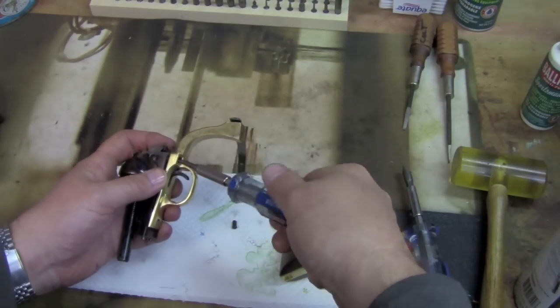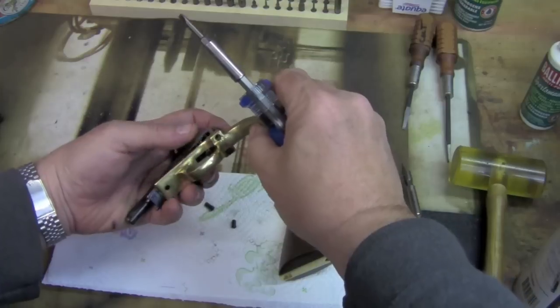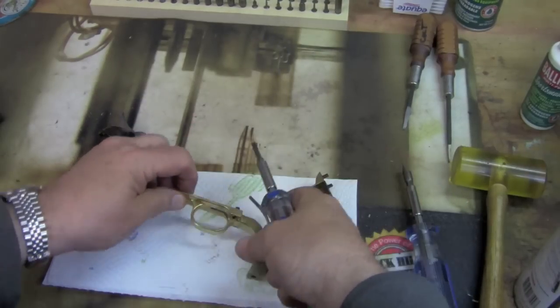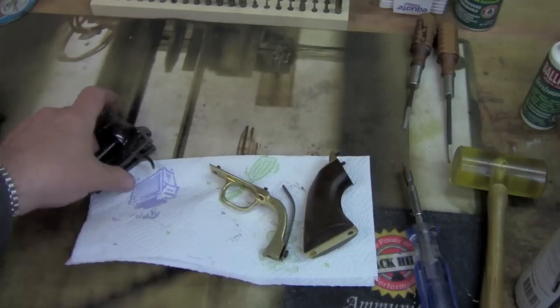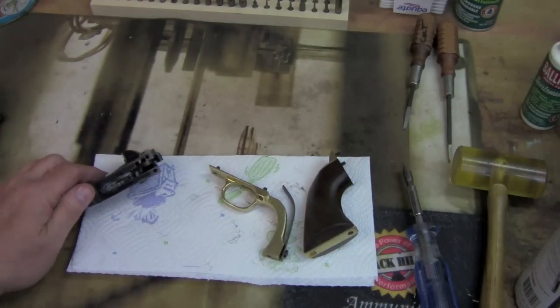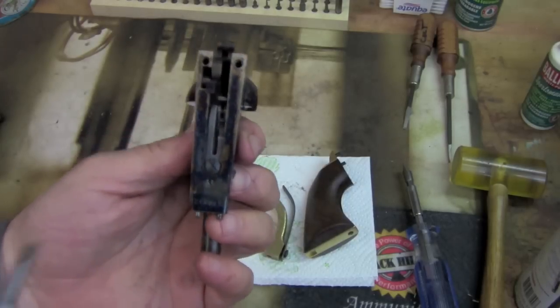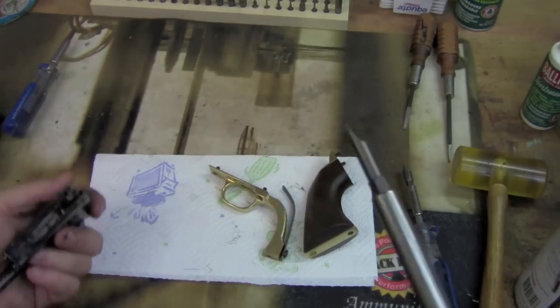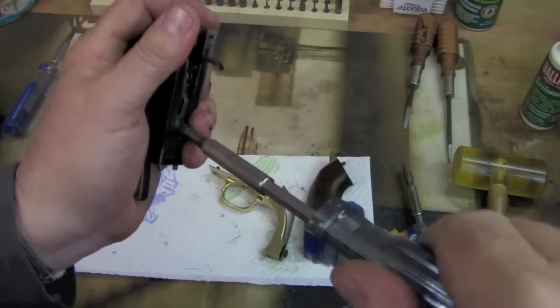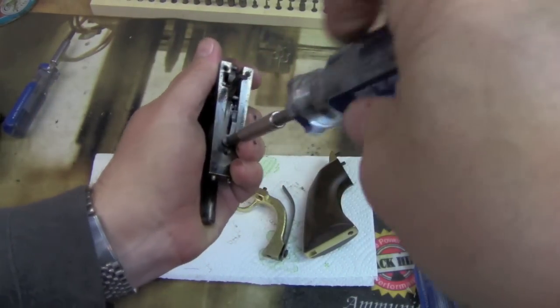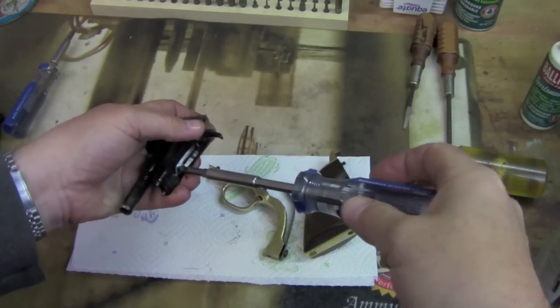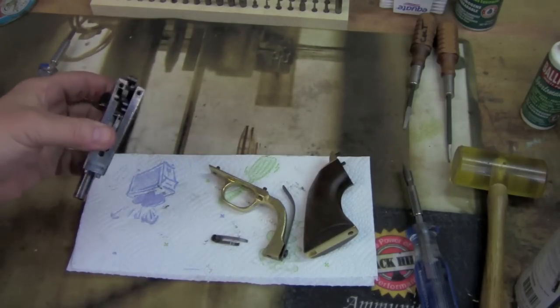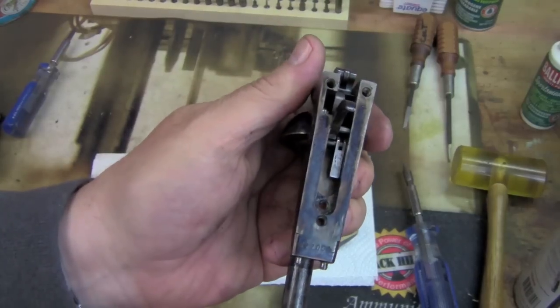So now I'm just going to pull these two screws completely out. And there we go, that's going to reveal the internal mechanism. Once again I'm keeping the screws with it, because I want to make sure I don't mix anything up. So the next thing we're going to do is pull out the trigger and bolt spring. So once again I'm changing screwdrivers, because this trigger and bolt spring likes a 240-4 to get in and get that out.